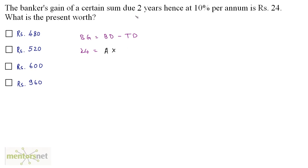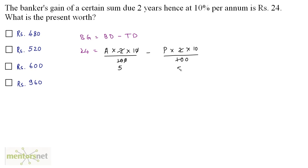I can write: A × N × R / 100, where N is 2 and R is 10. Minus true discount, which is the interest calculated on the present worth. Let the present worth be P. So this equals P × 2 × 10 / 100. Simplifying: 2 × 5 = 10, and 2 × 5 = 10 again. So 24 equals (A minus P) divided by 5. Therefore 24 × 5 = 120 equals A minus P.